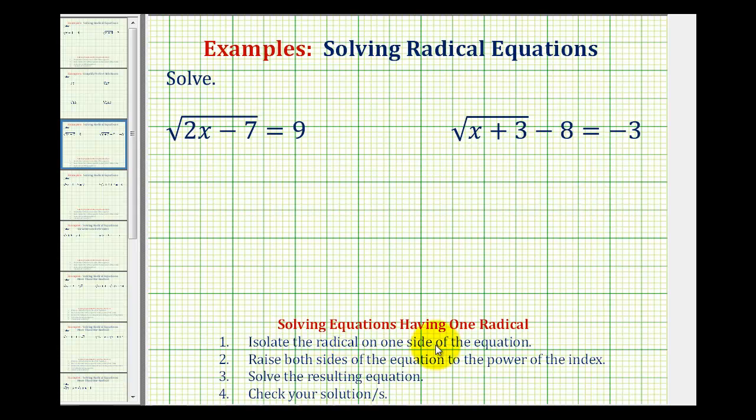In order to solve a radical equation containing one radical, we want to start by isolating the radical on one side of the equation. Then we want to raise both sides of the equation to the power of the index. This will undo the radical, and then we'll solve the resulting equation and check our solutions.